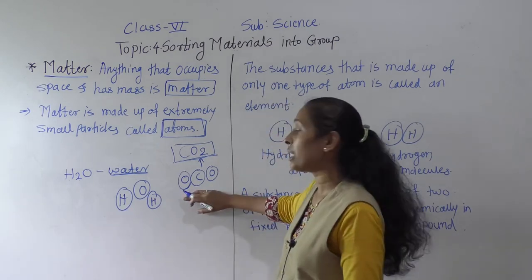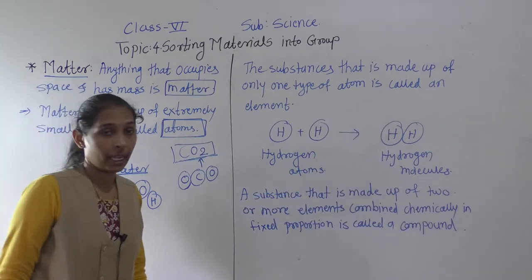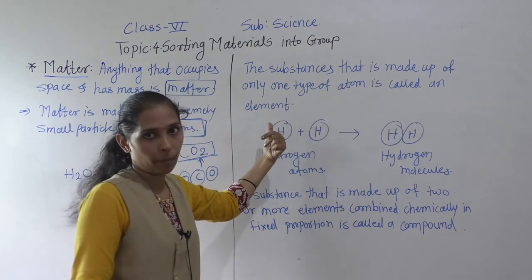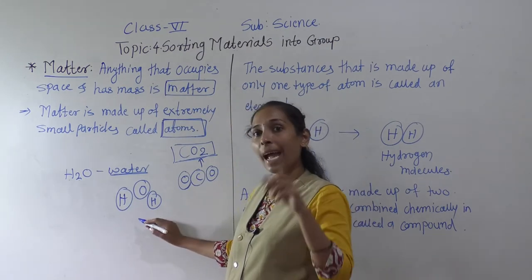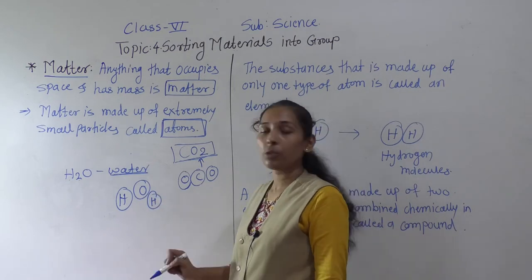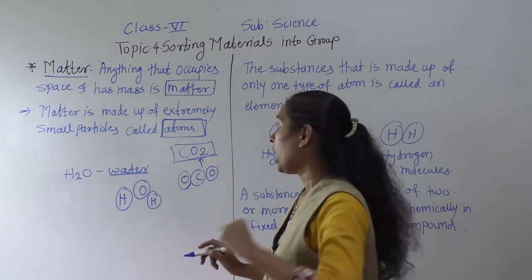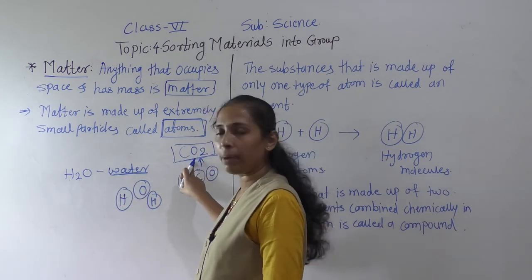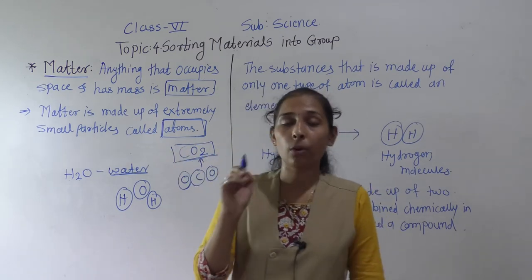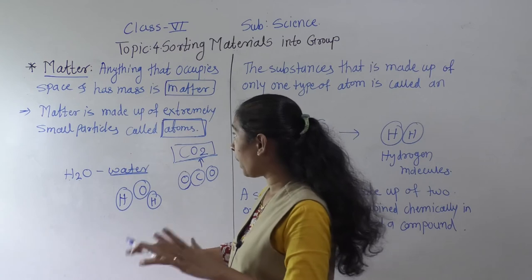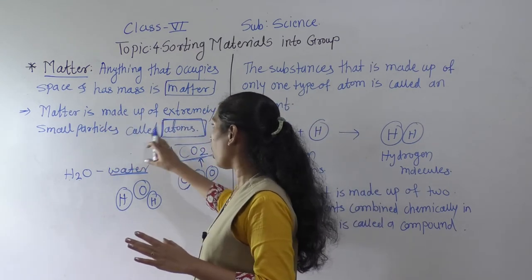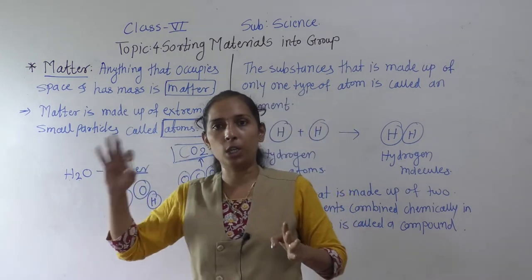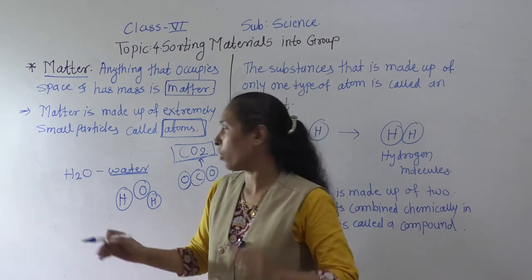This is why we call them water molecule and carbon dioxide molecule — because atoms come together to form them. When different types of atoms combine, they form molecules. These are important concepts: matter is made up of extremely small particles called atoms, and when different atoms come together they form molecules. We have seen examples with water and carbon dioxide.